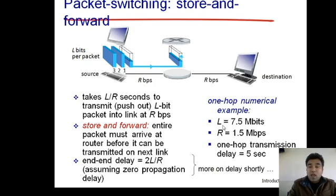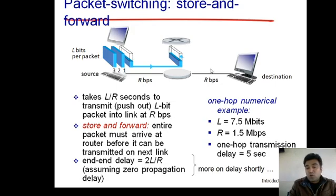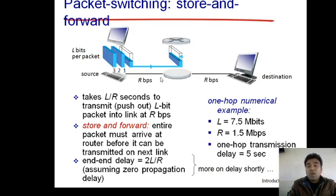Since we have two links, the total time is 2L/R. The first L/R is for transmitting the packet from the source to the intermediate router, and the second L/R is required to push all the bits of the fully-arrived packet from the router onto the second link, whose transmission rate is also R bps. Therefore, the total time for a single packet to travel from source to destination is 2 × L/R.